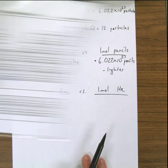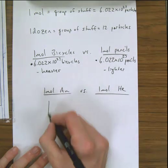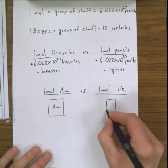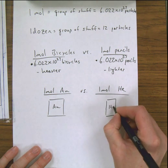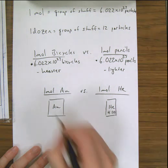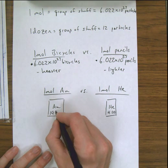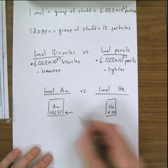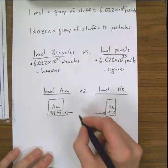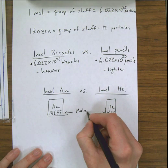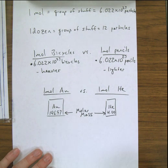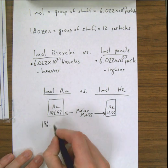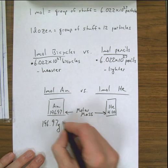For helium it's 4, and for gold it's 196.97. That number on the bottom of the periodic table square is the atomic mass, but it can also be referred to as molar mass. The reason it can be referred to as molar mass is because it tells you how heavy that element is if you have one mole of it.